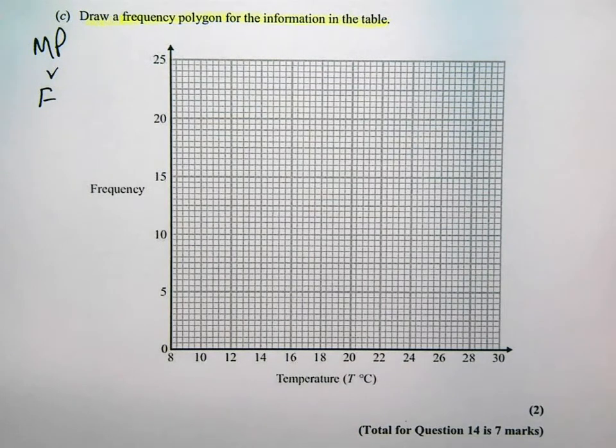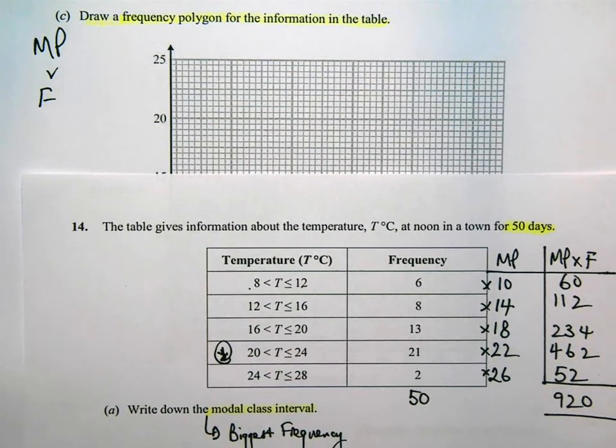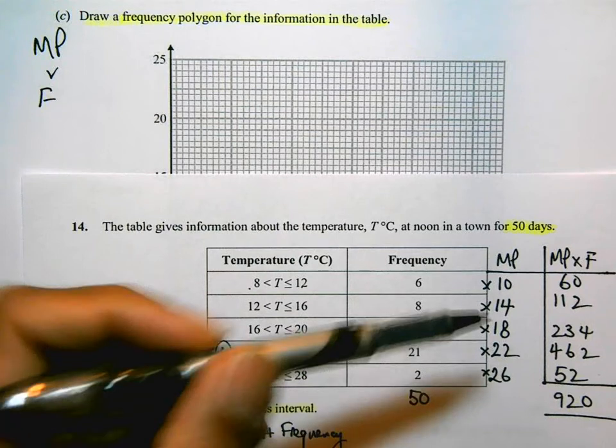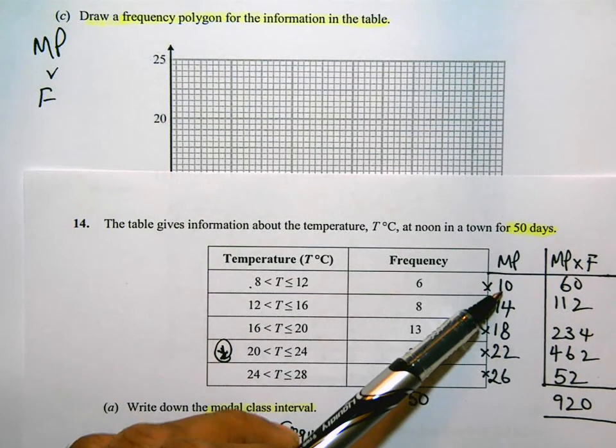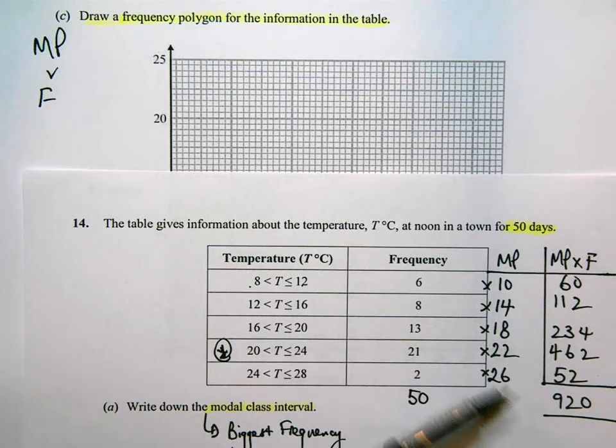I'm going to bring back my previous table. And here, I've got the midpoints. 10, 14, 18, 22, and 26, which I worked out for the estimated mean. And if it wasn't there, if I didn't have to do that, I'd actually have to work it out from these groups.